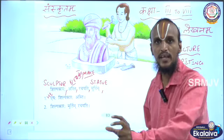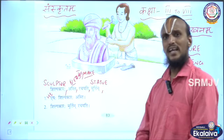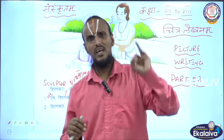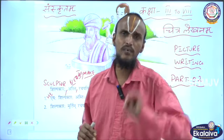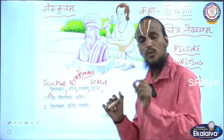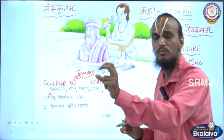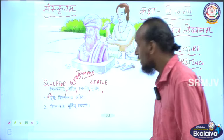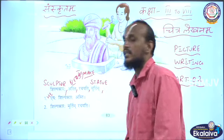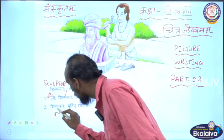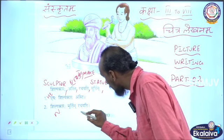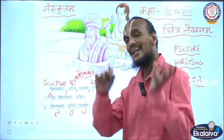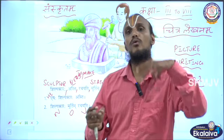Then: Shilpa Karaha Moorthyam Rachayati — the sculptor is making a statue. In English you make a sentence with a subject, a noun, a verb, a helping verb. Likewise in Sanskrit: Shilpa Karaha is the noun, Rachayati is the verb, and Moorthyam is the object.